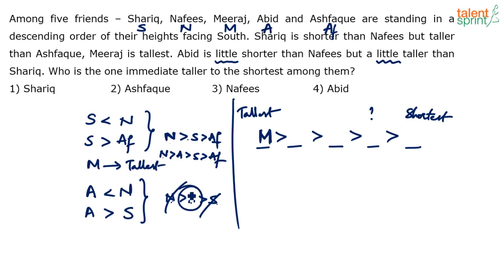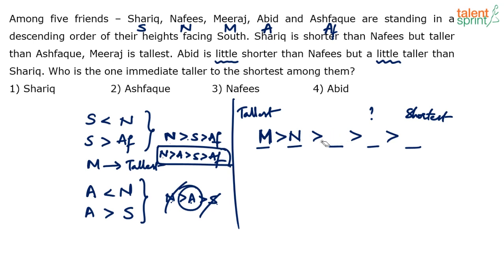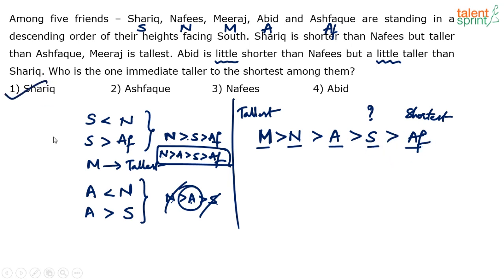In between we have Abid placed between N and S. So the full sequence is N, A, S, AF — with Miraj at the front as the tallest. The complete order is M greater than N greater than A greater than S greater than AF. The second shortest person — immediately taller than the shortest — is Sharik. So option one is the final answer.